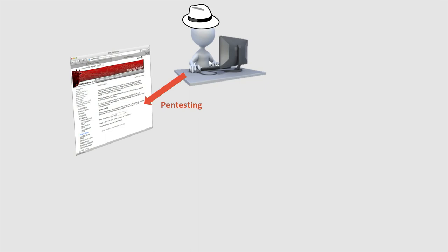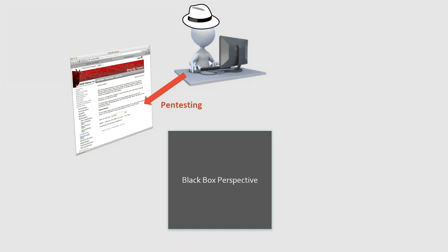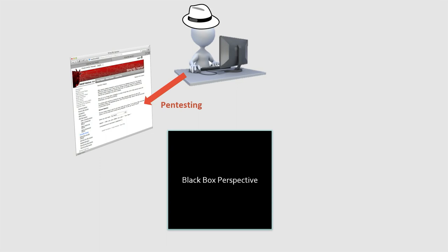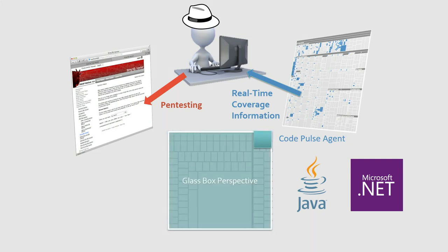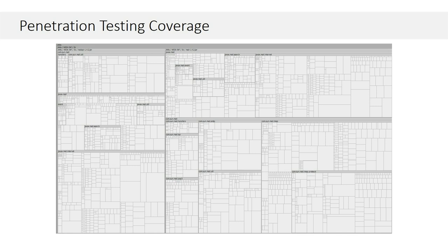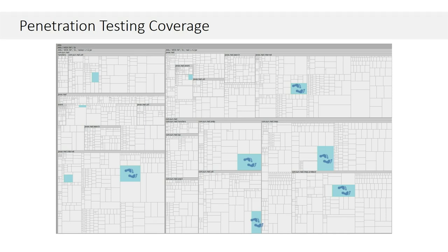Here's how CodePulse works. You have your penetration tester looking at an application — in this case WebGoat — from a black box perspective. With a CodePulse agent installed within the application (we have support for Java and .NET), it provides real-time code coverage information, turning that black box into a glass box so you can see what's going on inside. Each box in the interface represents a method within the application, grouped by the classes and namespaces involved. As you test the application, the boxes highlight, showing you where you're going during your testing activities — like a blueprint for your software.